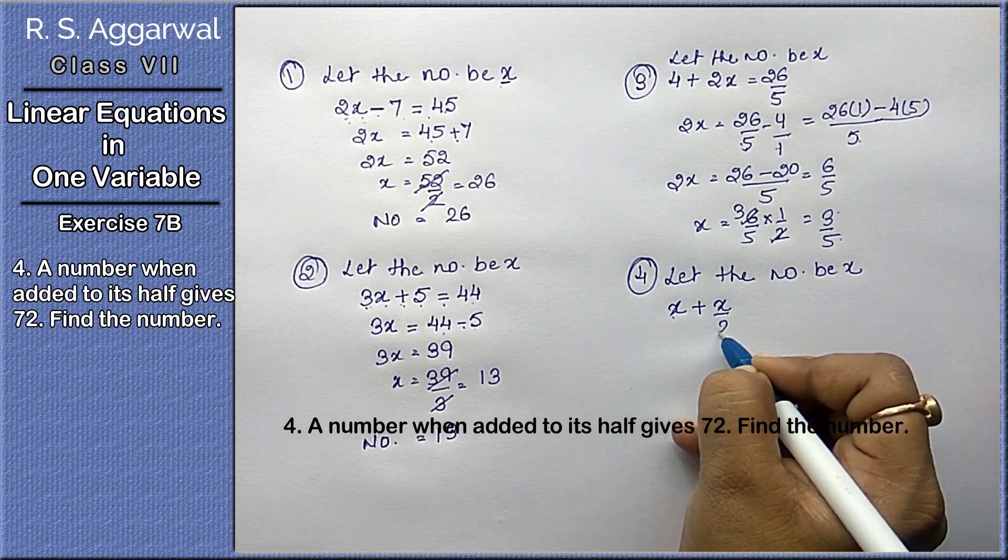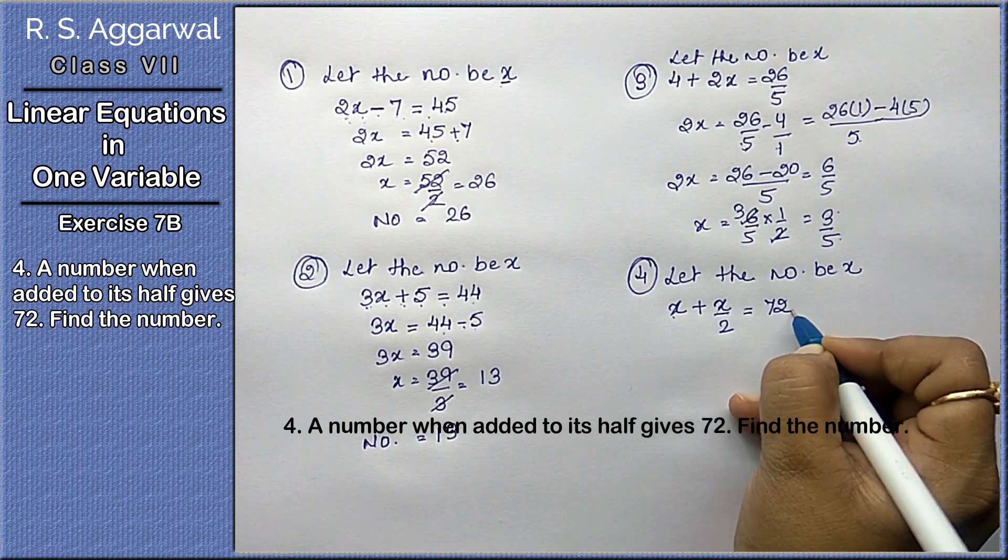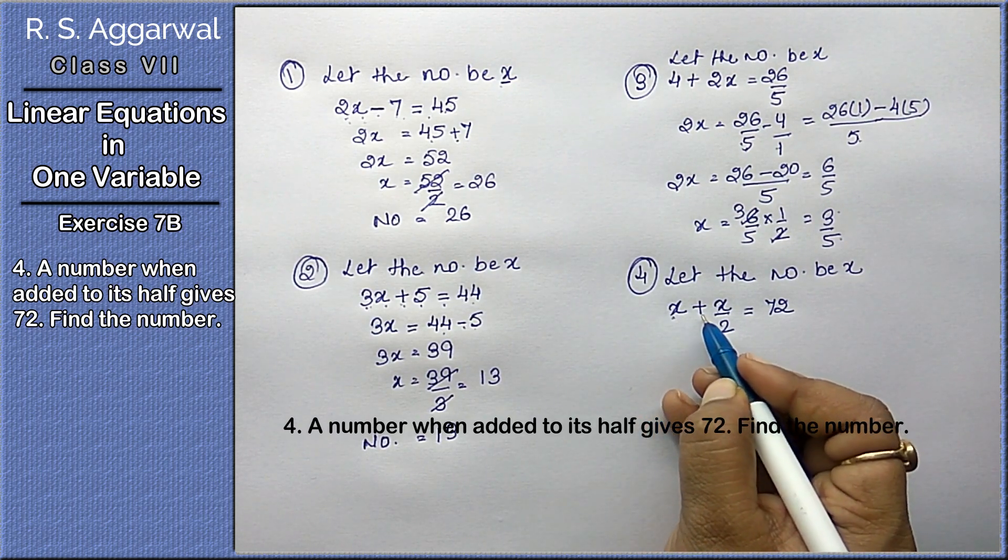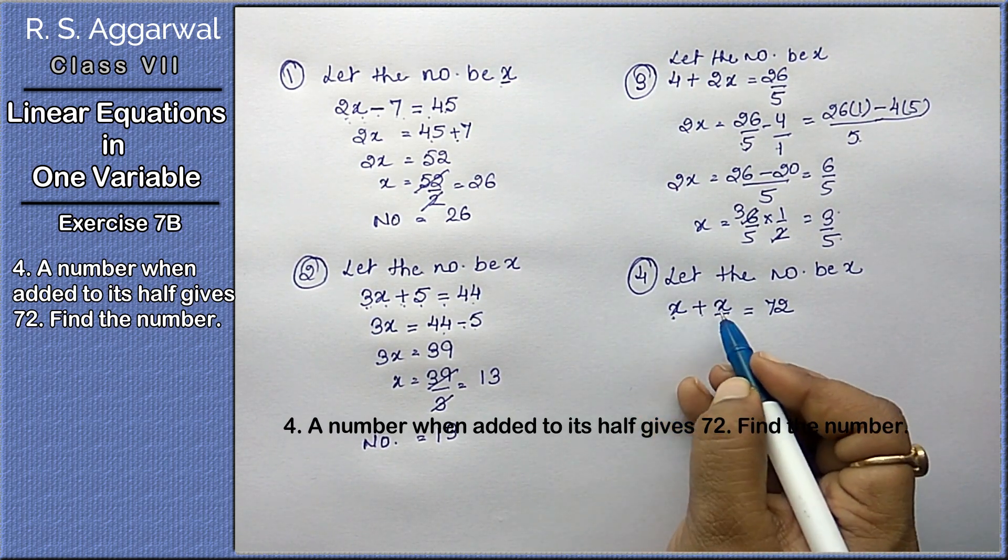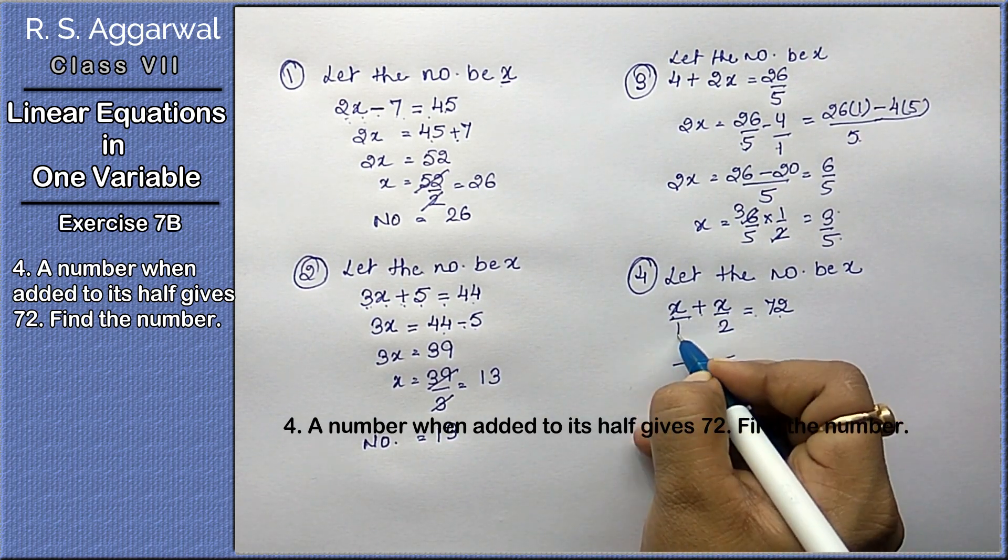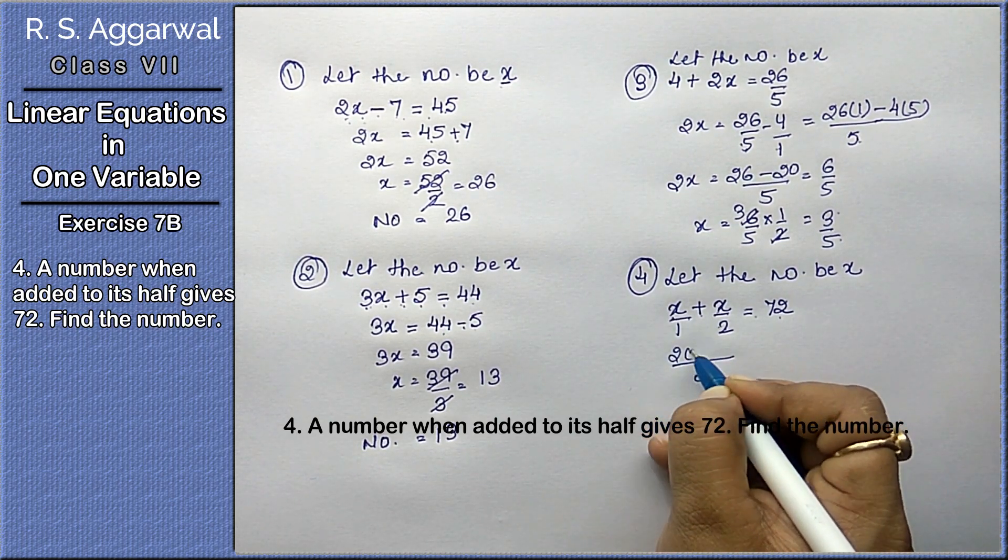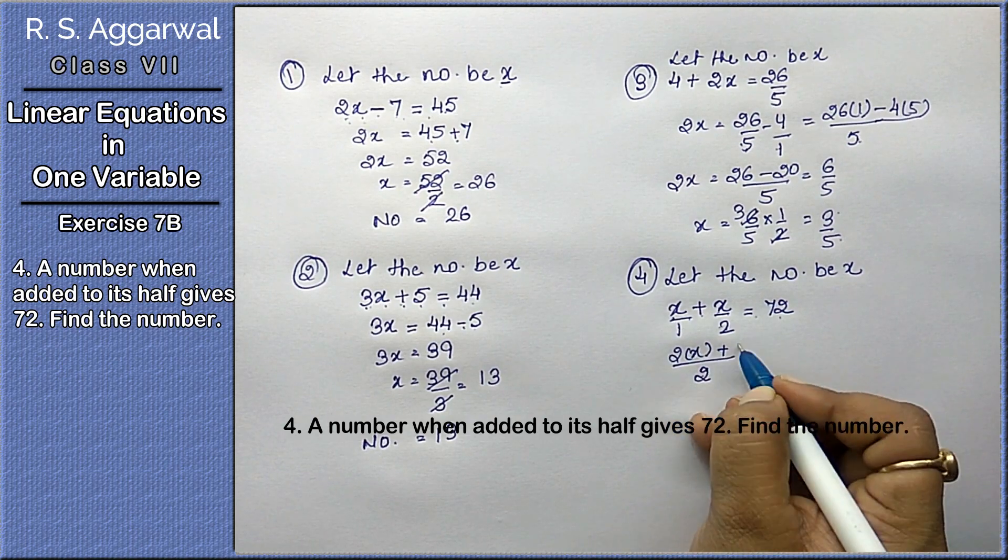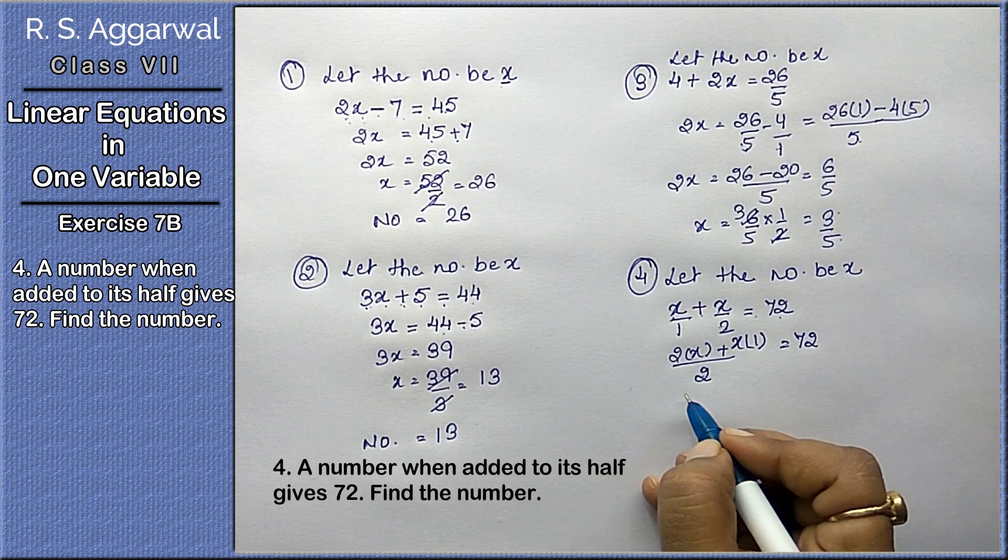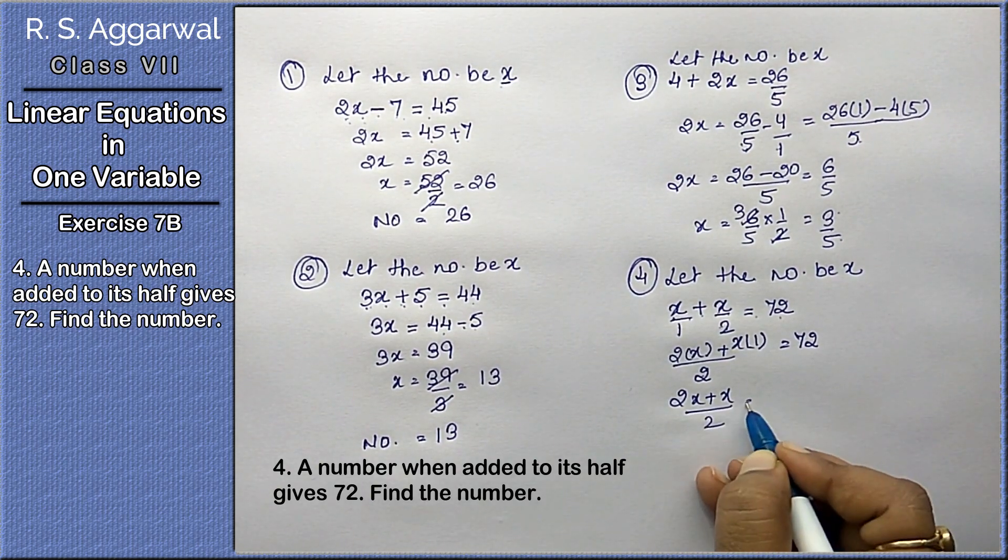Will give you 72. When this number is added to its half, it will give you 72. LCM is 2. 2 into x plus 2 ones are 2, x into 1 equals 72.